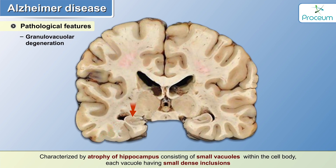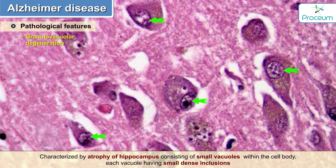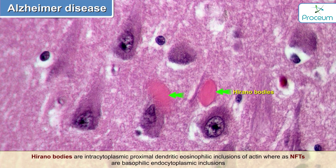Granulovacuolar degeneration is characterized by atrophy of the hippocampus, consisting of small vacuoles within the cell body, each vacuole having small dense inclusions. Hirano bodies are intracytoplasmic proximal dendritic eosinophilic inclusions of actin, whereas NFTs are basophilic intracytoplasmic inclusions.